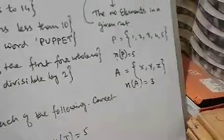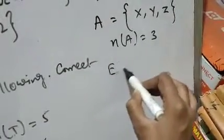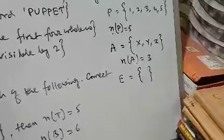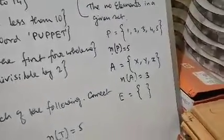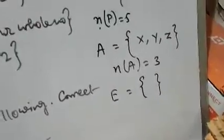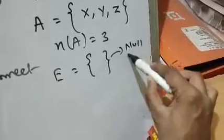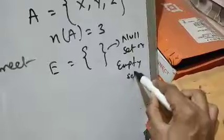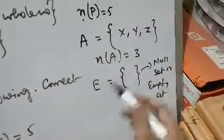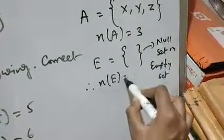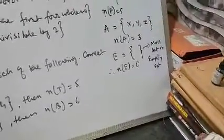Another example: suppose the set is E and it has no elements. If there is no element, the set is known as a null set or empty set. We have discussed null sets, disjoint sets, overlapping sets in previous lectures. Since there are no elements in this set, the cardinal number will be zero. So the cardinality of an empty set is 0.